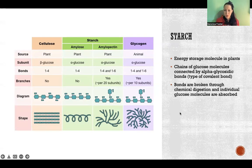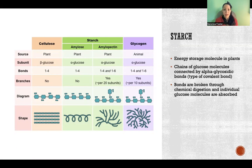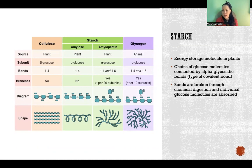Starch is the energy storage molecule in plants. Through photosynthesis, plants produce carbohydrates, and a primary carbohydrate they produce is starch. These are chains of glucose molecules connected by alpha-glycosidic bonds, which is a type of covalent bond that we are able to break. We break the bonds between glucose molecules so that we can absorb that glucose. Because these are very large compounds made up of many glucose molecules, it takes time to break all those bonds, giving us a slow release of glucose into the bloodstream. This is very different from simple carbohydrates — monosaccharides require no bond-breaking and disaccharides only one — so we get a big rush of blood glucose with simple carbs compared to the slow release from complex carbohydrates.